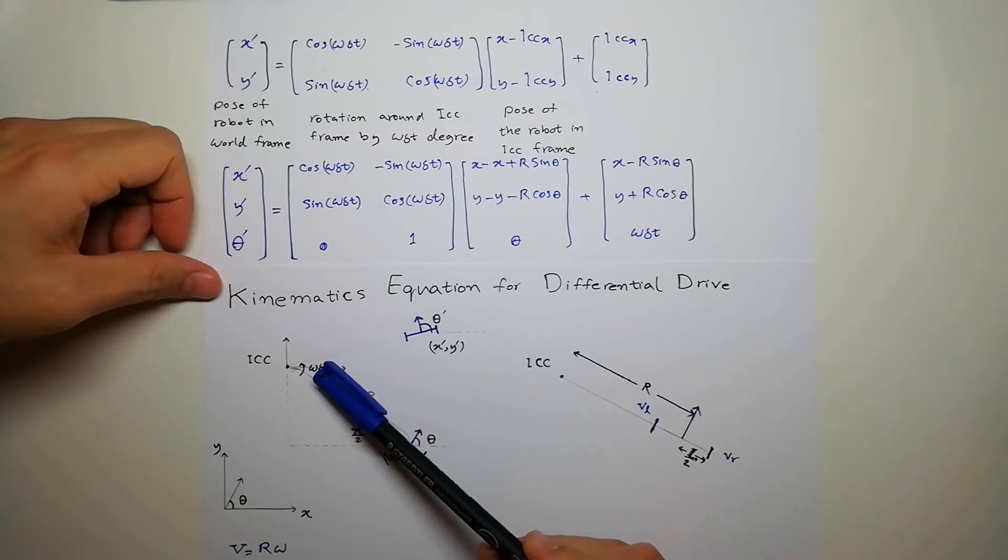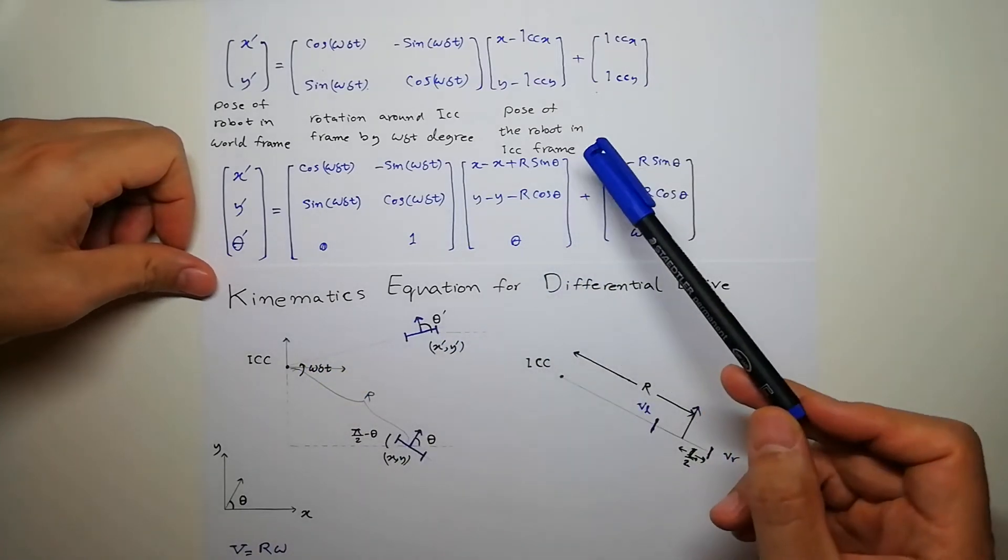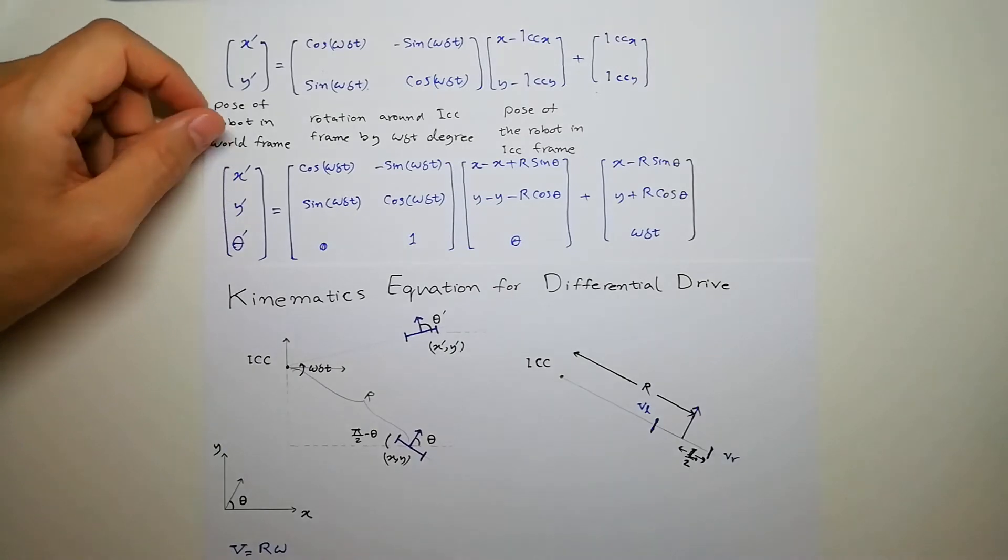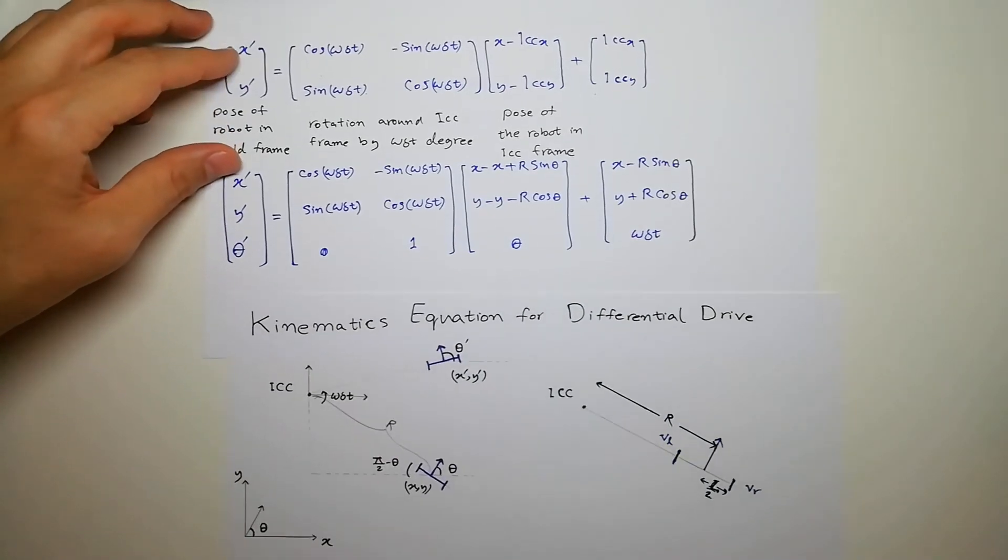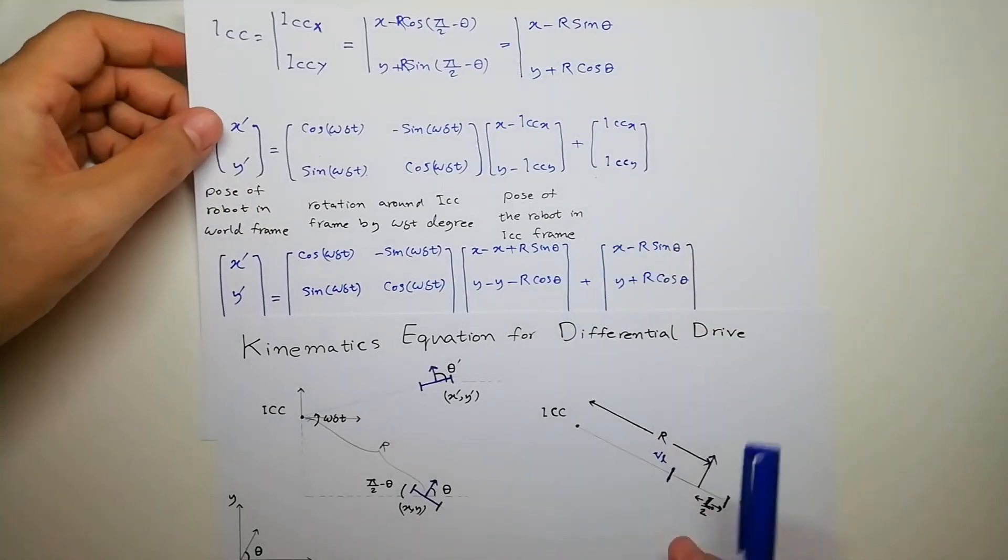And we know that we were rotating with angular velocity of omega and for delta T, which I put it here for rotation. So let's plug this equation there to see what we get.